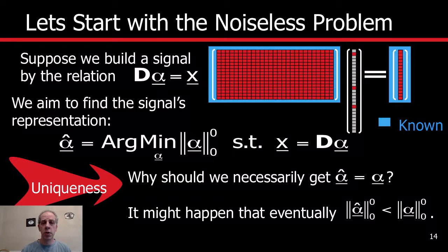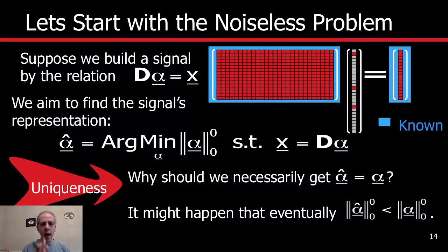An example where the solution is unique is in DCT — discrete cosine transform — or in the Fourier transform. We know that the transform of a signal in Fourier or discrete cosine transform is unique. What was the difference? In one scenario, D had repeated columns. In the other, every column is independent of the rest — they are orthogonal to the rest. So the structure of the dictionary D has a lot to do with the uniqueness of alpha.